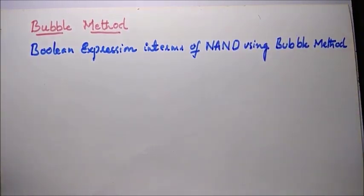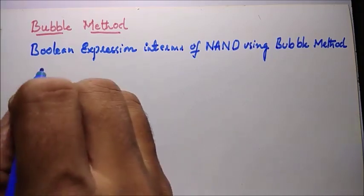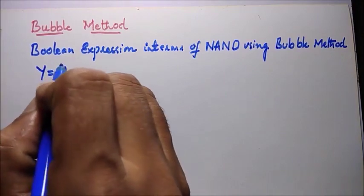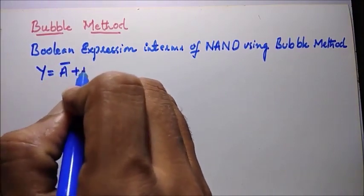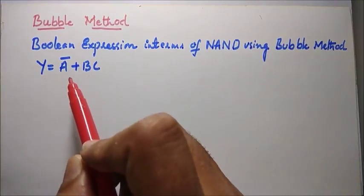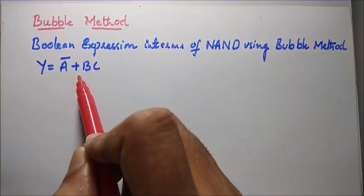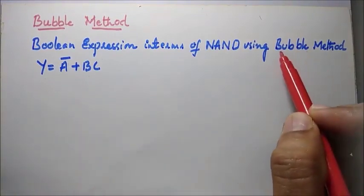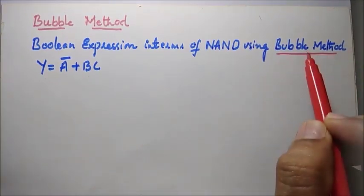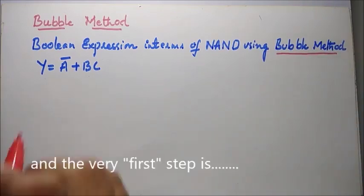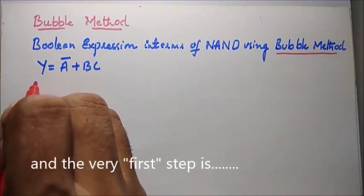Let's consider a simple boolean expression given by y = A̅ + BC. Our aim is to represent this boolean expression in terms of NAND gate using the bubble method. This bubble method has its own steps, so let's start with step number one.